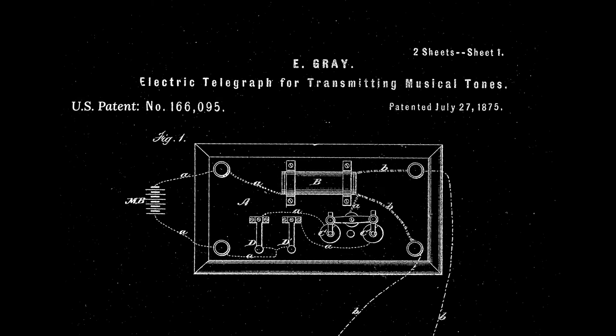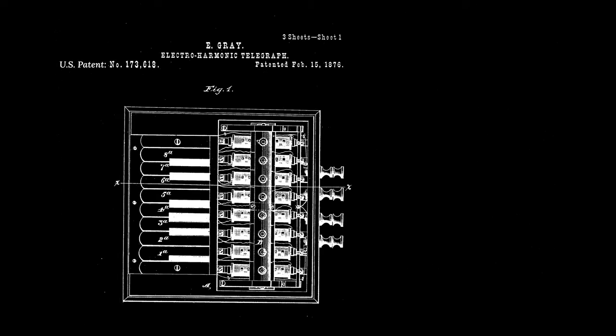But nobody can press a lever 400 times a second, so Gray attached a special spring to do the pressing for him. He combined 12 of these machines, each with differently-tuned springs, to create one of the first electronic instruments, the musical telegraph.